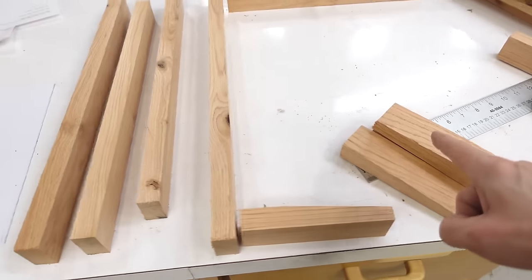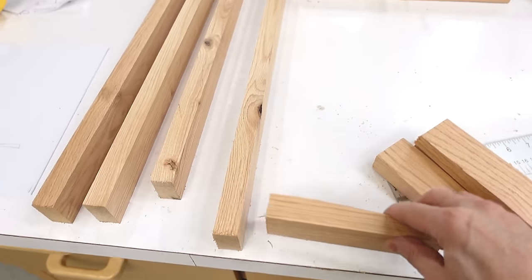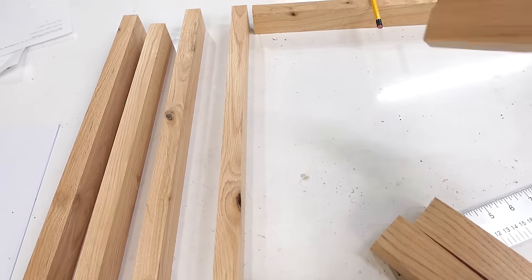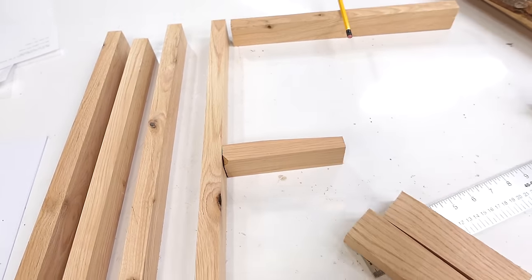These will be the verticals, and then these are the feet that'll be box joined onto here, and then half of this is going to join on here to hold the top shelf, and I still need to make some pieces that go here to hold the middle shelf.